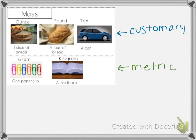A kilogram is about the mass of a textbook — about how heavy a textbook is. If we're measuring mass, we're going to use a scale or triple beam balance. And we can use the benchmarks to help us make an estimate. So if we needed to know the mass of a dollar bill, we would say that's about one gram, because that would be about the same as one paper clip.